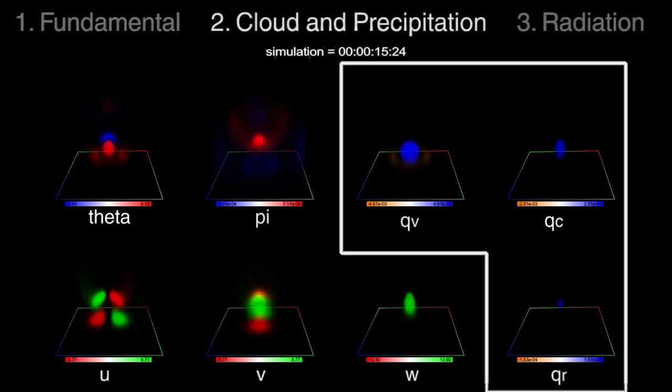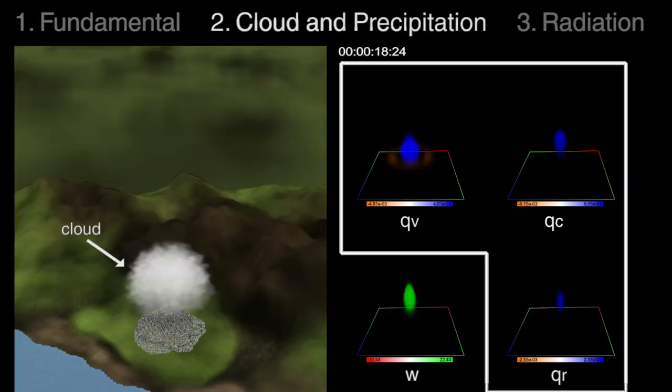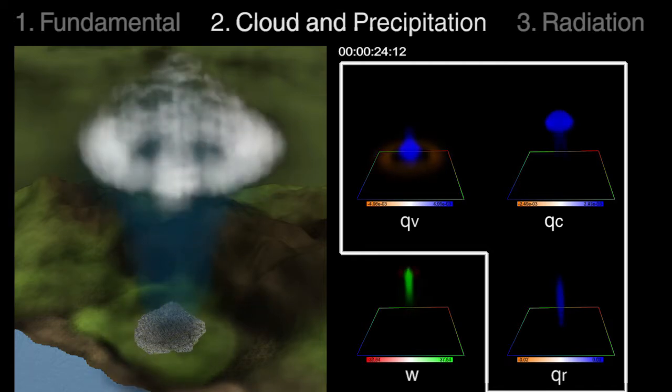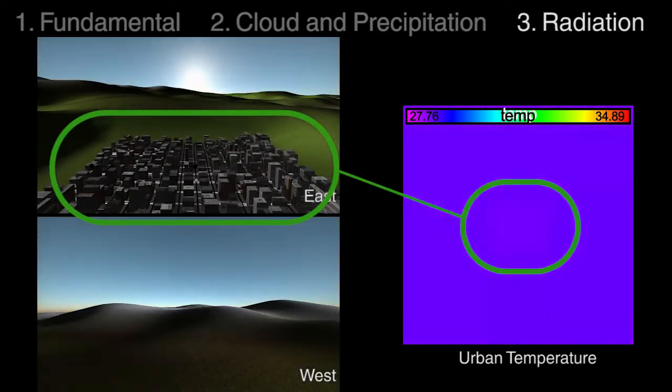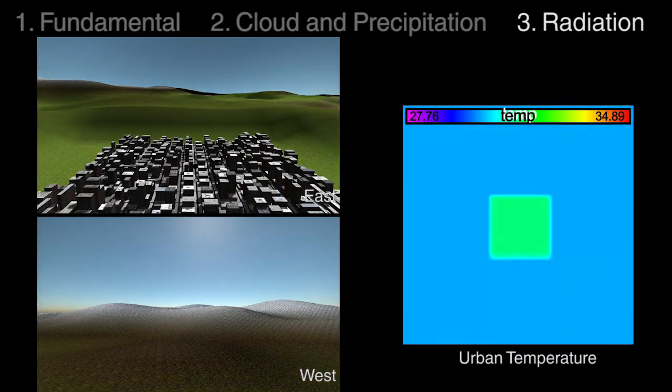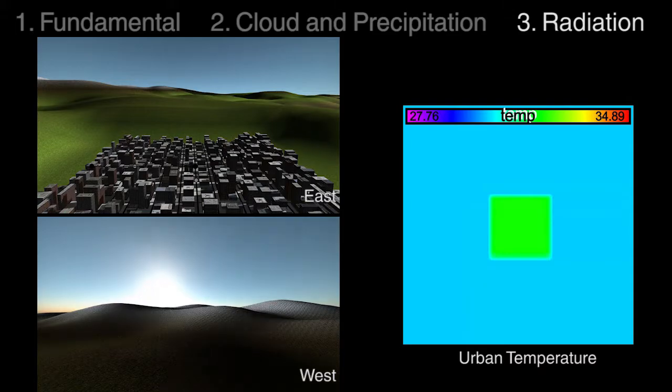The second component models the clouds and precipitations at urban scale using equations derived from Gelsen's Microphysic Scheme. The radiation component models how the sun's radiation interacts with the surface and the atmosphere, causing a variation in temperature that initiates all changes in the weather dynamics.